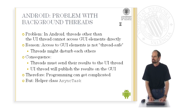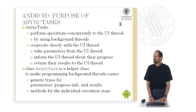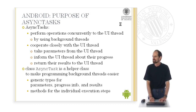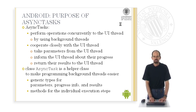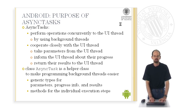For this reason programming can get quite complicated. But in Android there is a helper class AsyncTask which makes things easier. The purpose of AsyncTask is to perform operations concurrently — at the same time as the UI thread — by using background threads. They can cooperate closely with the user interface thread: they take parameters from the user interface thread, inform it about their progress, and return the results to the UI thread. AsyncTask is characterized by having generic types for the parameters, progress information, and results.